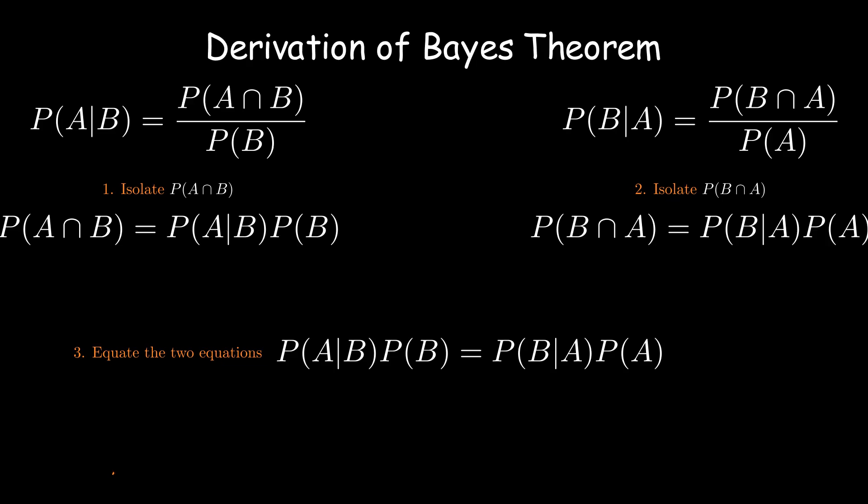Finally, by isolating P of A given B by dividing both sides by P of B, we get the Bayes' theorem equation. This is how we derive Bayes' theorem from the definition of conditional probability.